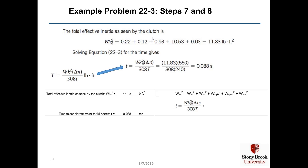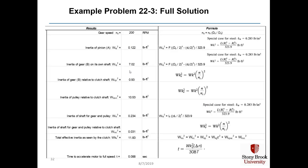Solving for time using t = WK²_eff × Δn / (308 × T): with WK²_eff = 11.83, Δn = 550, and T = 240 lb·ft, it takes only 0.088 seconds to accelerate shaft A to 550 RPM. A spreadsheet shows all calculations needed to solve this problem.